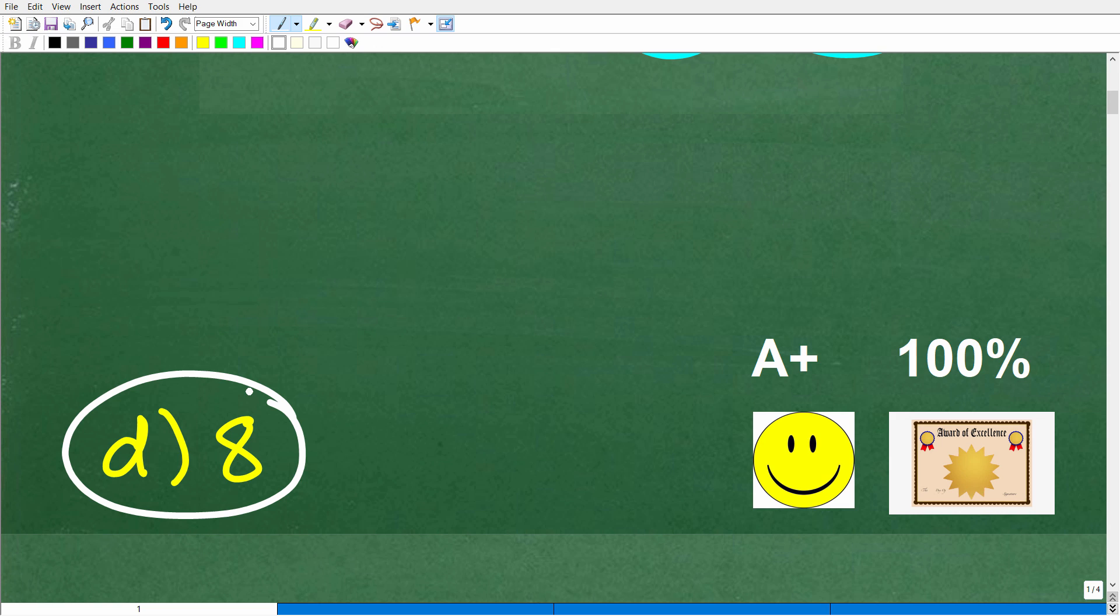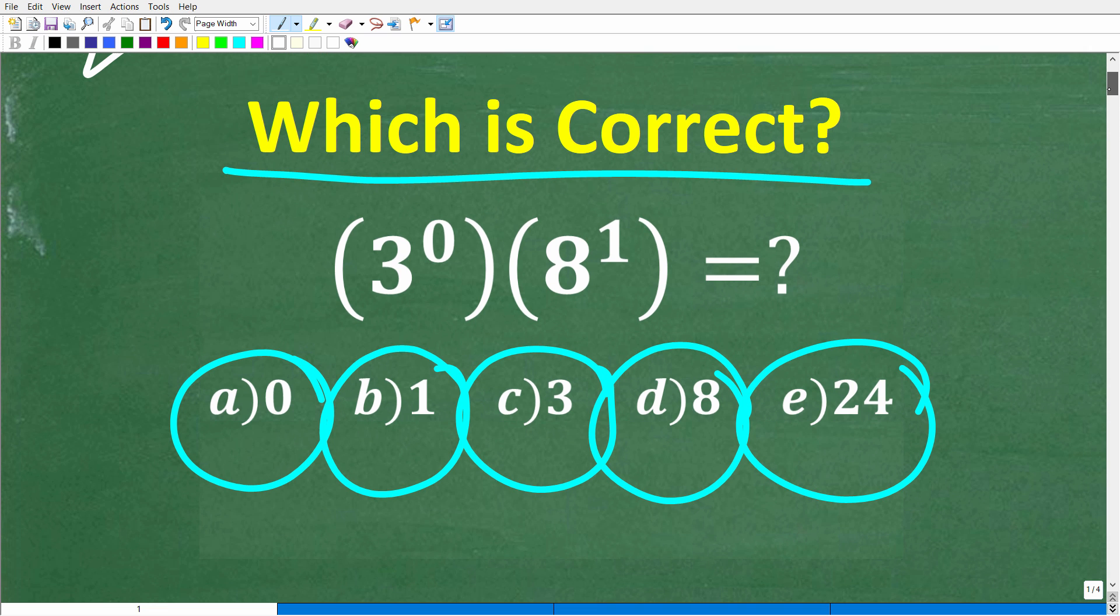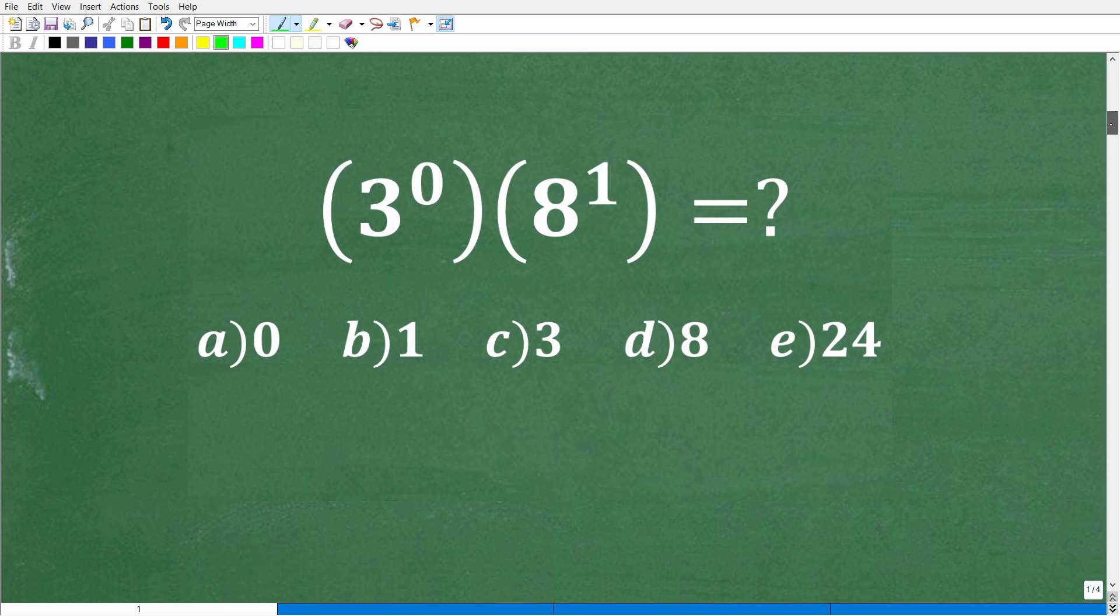If you got this right, you definitely get a happy face, an A plus, a 100%, and a certificate of excellence for being a certified professional expert and knowing what things are when 0 is the exponent. In other words, when we are taking a power where 0 is the exponent, like 3 to the 0 power, this is probably the most confusing part of this problem. This is something you absolutely need to understand in basic math and algebra.